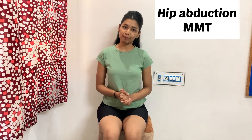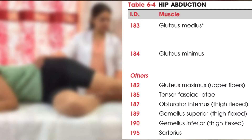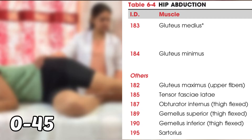First I will tell you about hip abduction MMT. The major muscles involved in hip abduction are gluteus medius and gluteus minimus. Other muscles are gluteus maximus upper fibers, tensor fascia lata, obturator internus, gemellus superior and inferior — these three muscles abduct the hip when the thigh is flexed — and lastly, sartorius. The normal range of motion is 0 to 45 degrees.